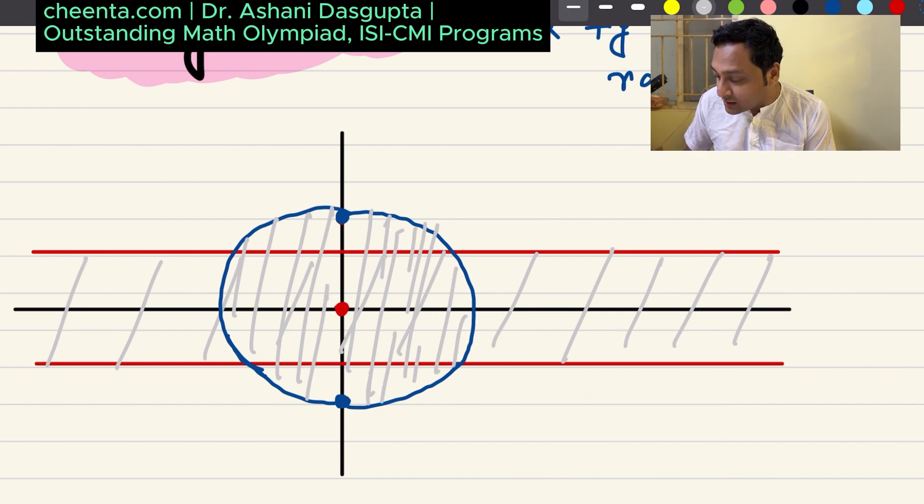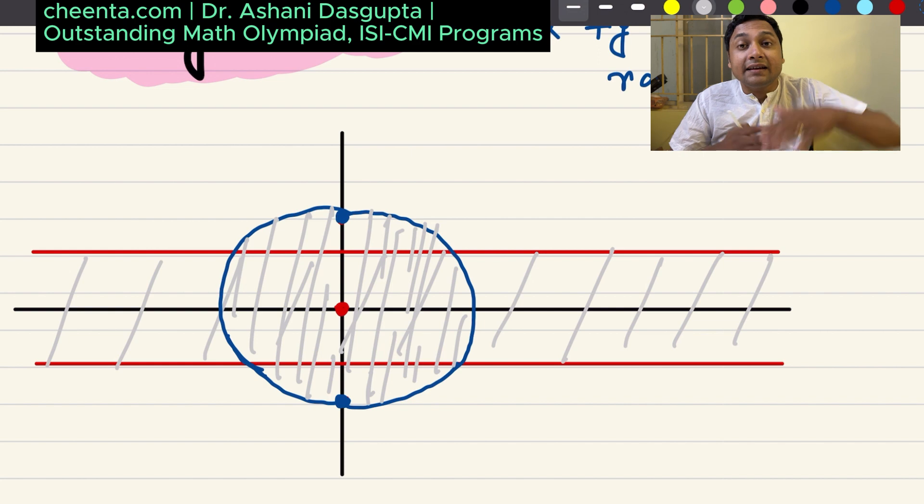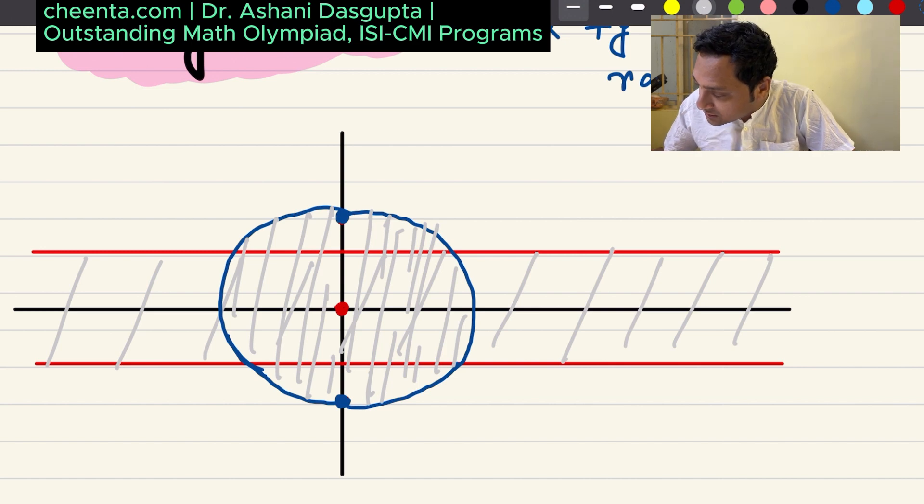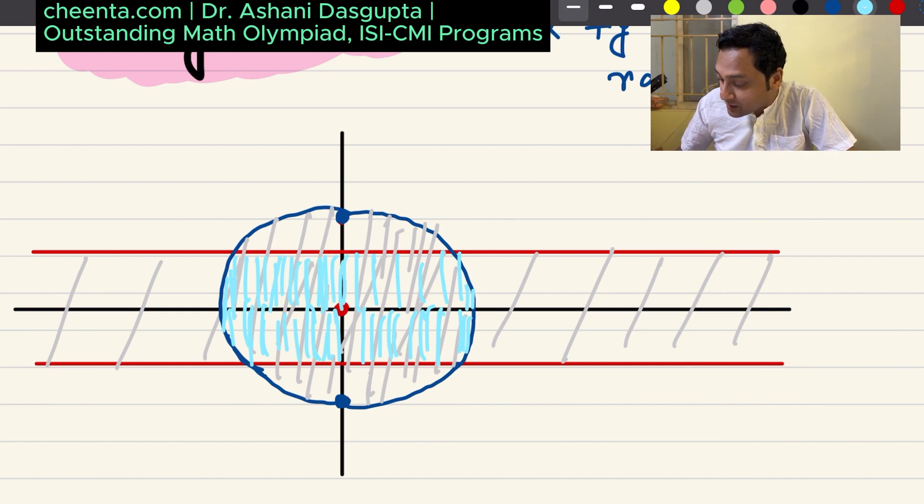So what do I want? I want the intersection of the area inside this circle and the area enclosed by the two red lines. That's my goal. That's what I want to find out. Let me draw that. This is the region that I'm interested in. I want to find out the area of this region.